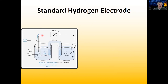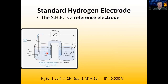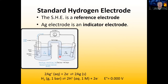Then we have this platinum wire running over here to our other electrode. The hydrogen electrode here is our reference electrode — the electrode that you know the potential of. And then you have another half cell or another electrode which you're trying to measure the potential of. We call that our indicator electrode.